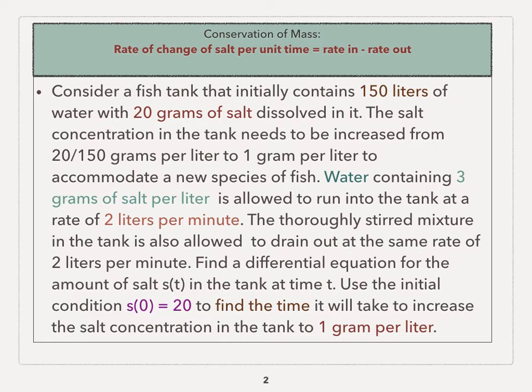Water containing 3 grams of salt per liter is allowed to run into the tank at a rate of 2 liters per minute. The thoroughly stirred mixture in the tank is also allowed to drain out at the same rate of 2 liters per minute. Find a differential equation for the amount of salt s(t) in the tank at time t, and then use the initial condition s(0) = 20 to find the time it would take to increase the salt concentration in the tank to 1 gram per liter.